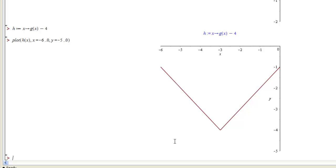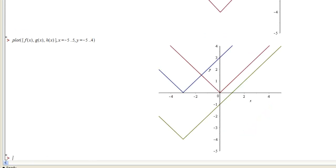So what if you want to visualize this by putting them all on the same graph? You can totally do that. You can plot f of x, g of x, and h of x. We want our x to go from, say, minus 5 to 5, and our y from negative 5 to, say, 4.